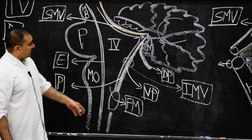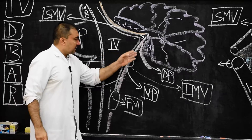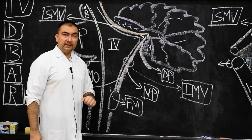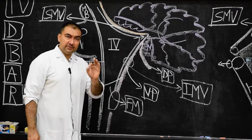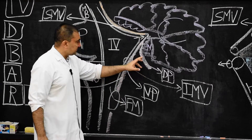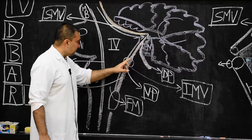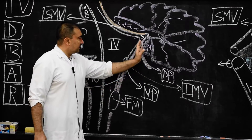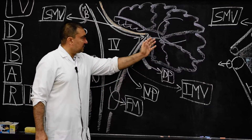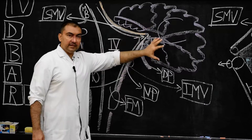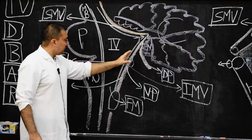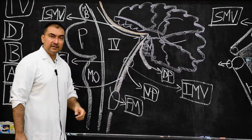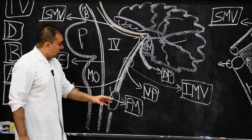This is about the tela choroidea of the fourth ventricle. The dorsal layer continues as the cerebellar pia matter, and the ventral layer will continue as the inferior medullary velum along with the ependyma.